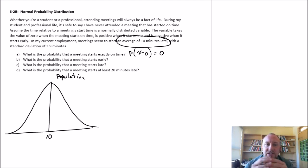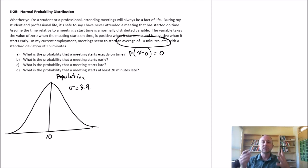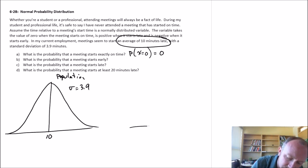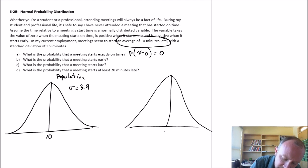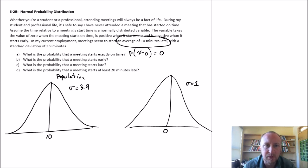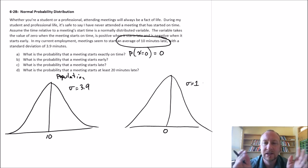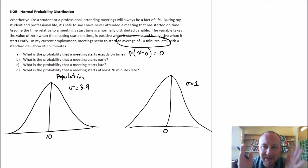We also know its standard deviation is 3.9. Now in addition to our population distribution, keep in mind that we will always be working with the standard normal distribution. The standard normal distribution has a mean of 0 and a standard deviation of 1. It's always helpful when working with these types of problems — particularly with the normal probability distribution, because there are going to be so many applications — to always keep these two distributions in mind and to be able to go back and forth between them.